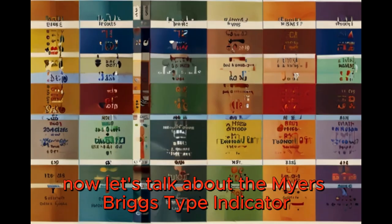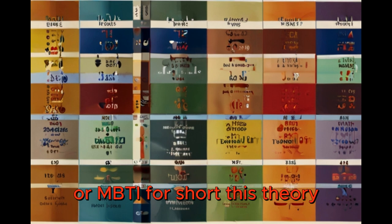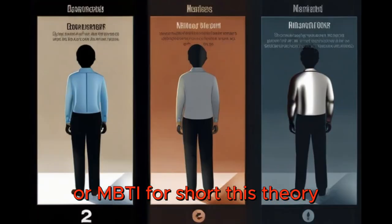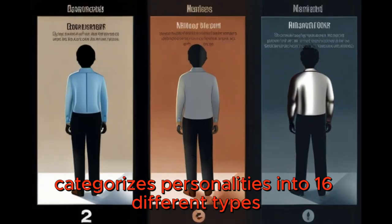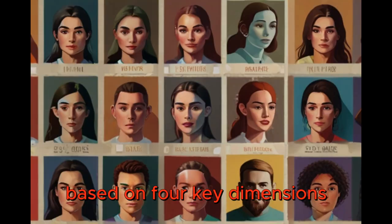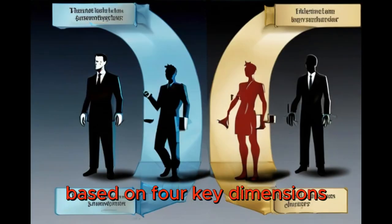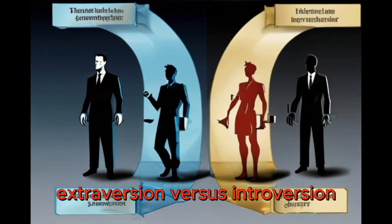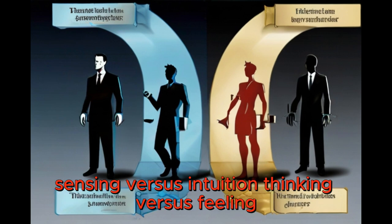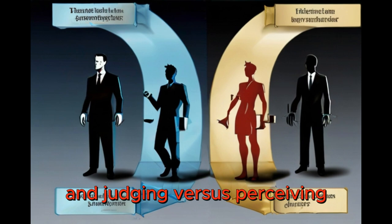Now let's talk about the Myers-Briggs Type Indicator, or MBTI for short. This theory categorizes personalities into 16 different types based on four key dimensions: extroversion versus introversion, sensing versus intuition, thinking versus feeling, and judging versus perceiving.